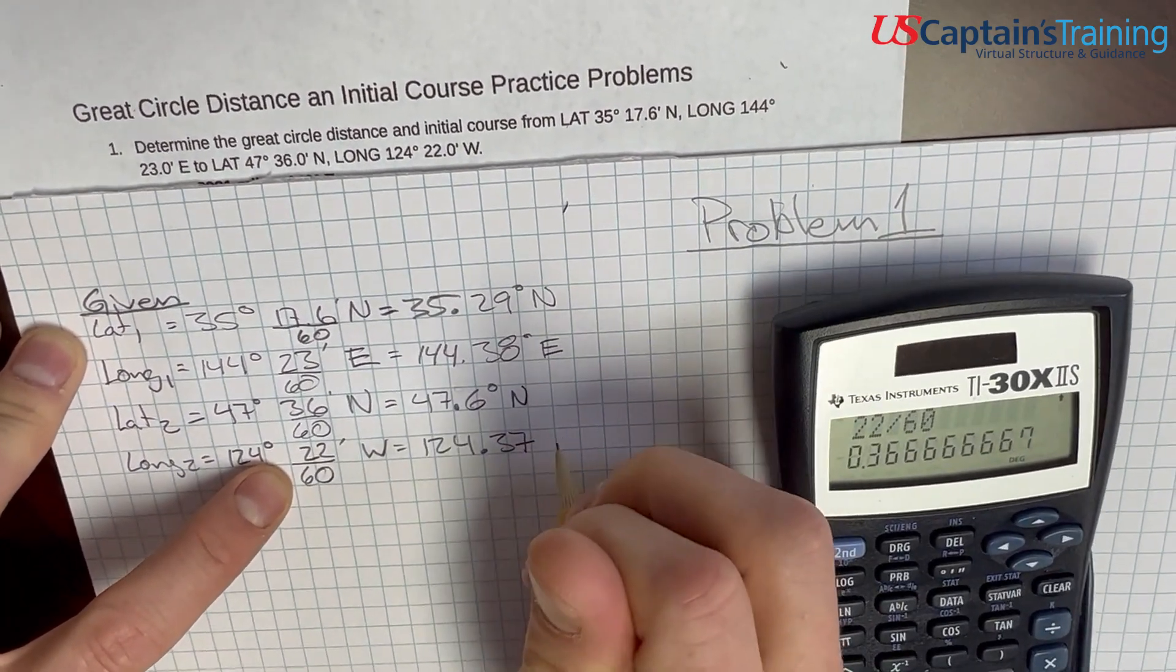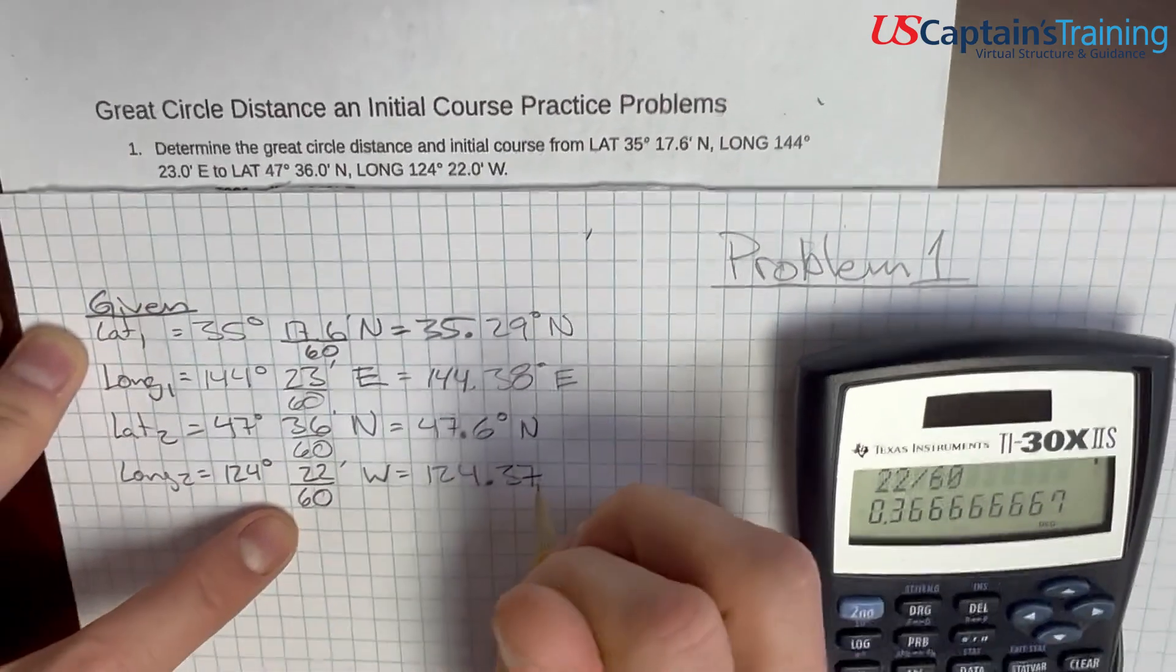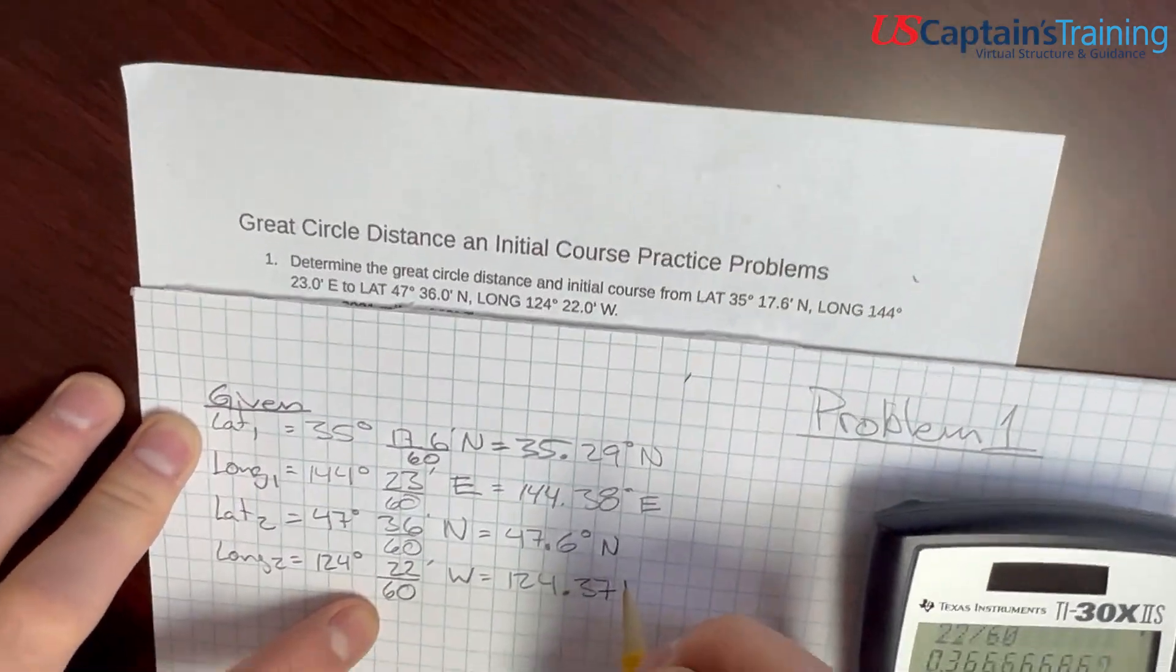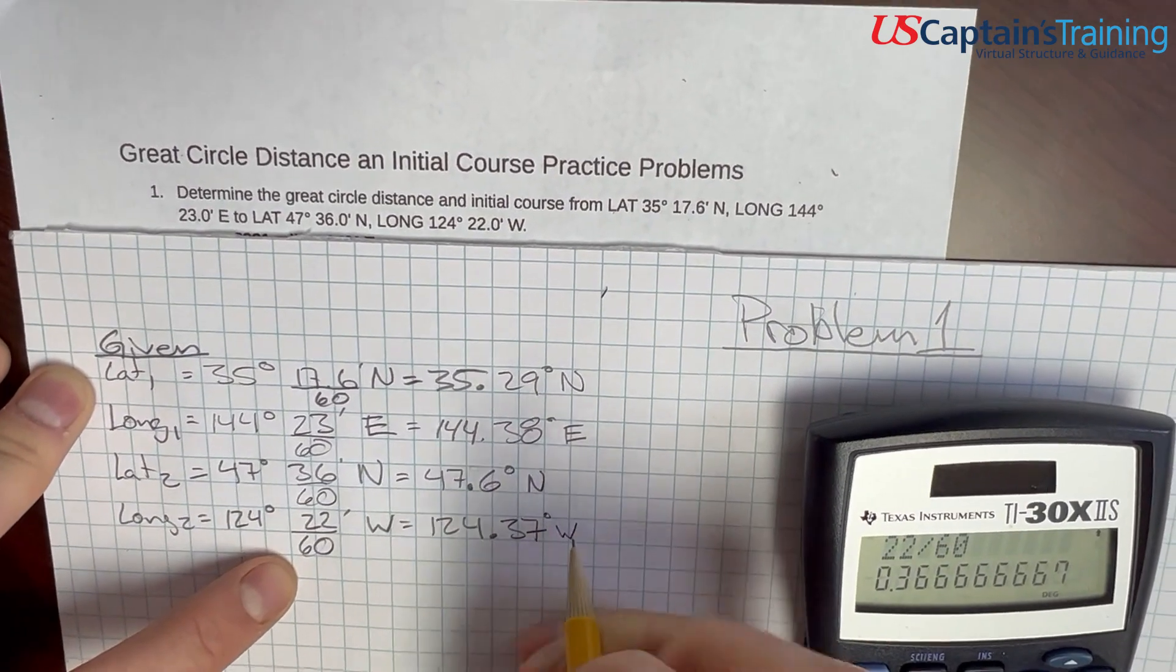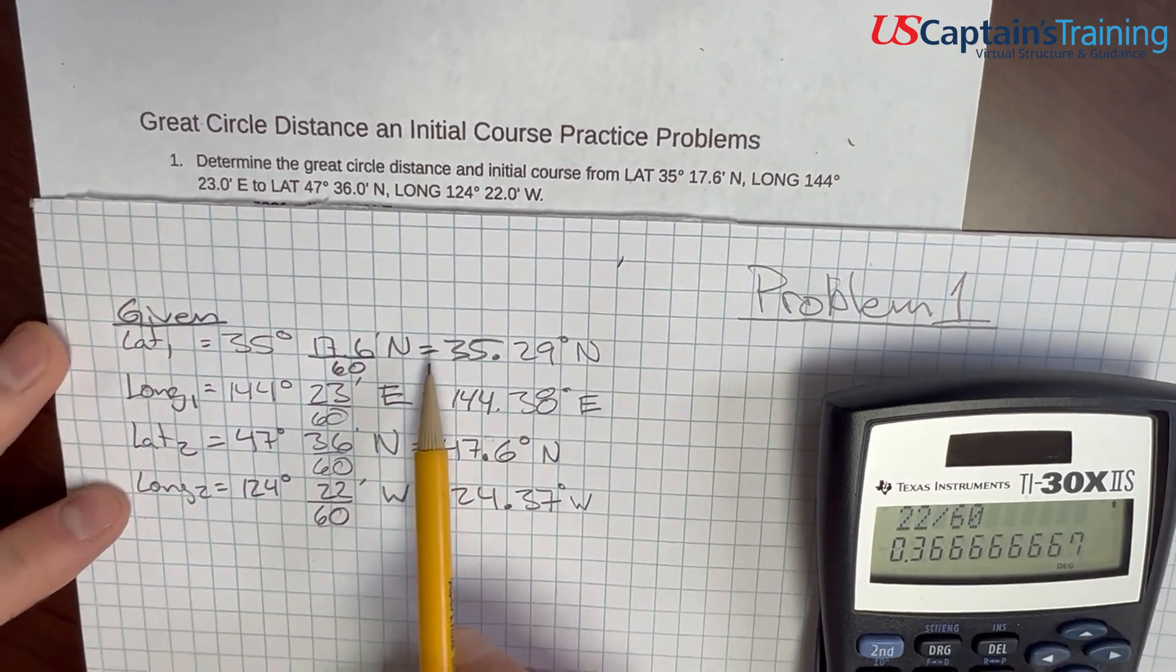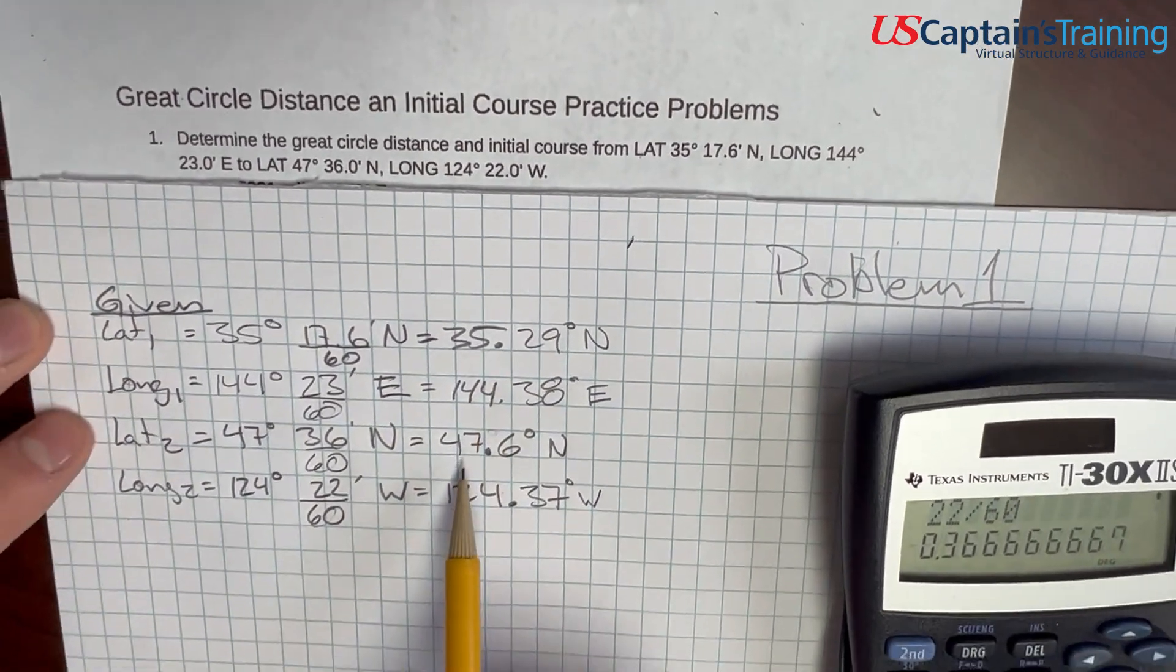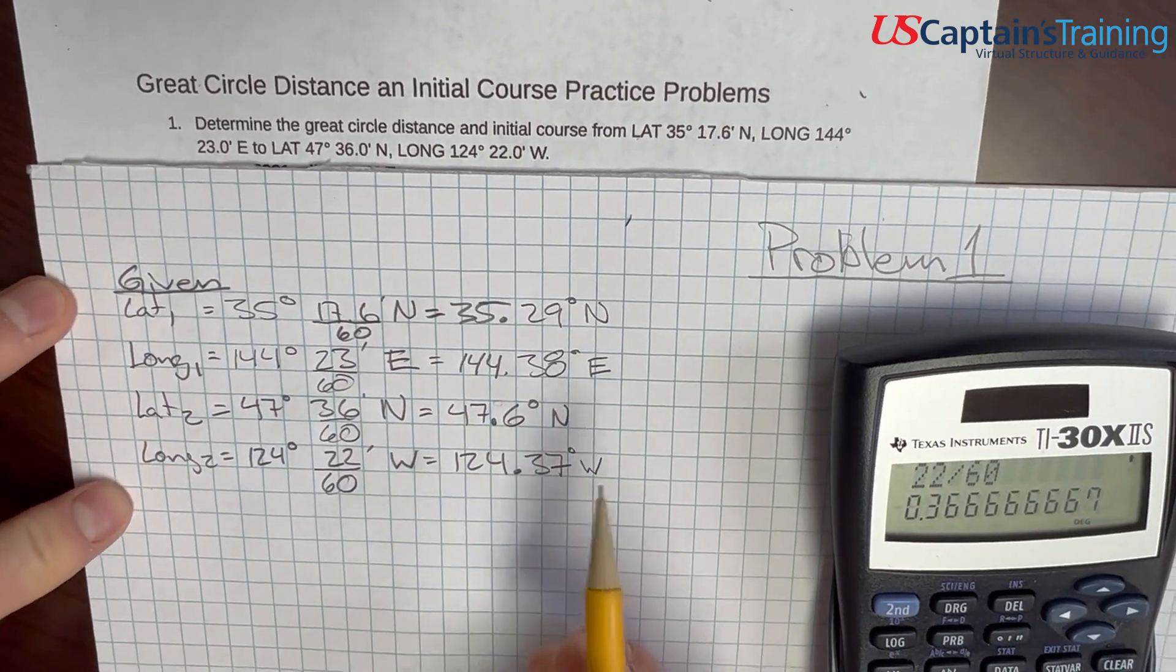I take these to two decimal places. I've seen them taken to three, but from my experience, the answers are coming out about the same. Very close. Okay, so, here's all of lat 1, long 1, lat 2, long 2, all converted into only degrees.